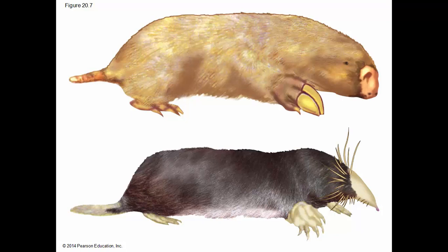Convergent evolution occurs when similar environmental pressures and natural selection produce similar or analogous adaptations in organisms from different evolutionary lineages. Here we see on top the Australian marsupial mole, and at the bottom the North American mole. They're very morphologically similar — both have paddle-shaped front feet with large claws for digging, noses covered with hard skin for burrowing, small hind legs, and both feed on insects and worms. But the one on top is a marsupial from Australia and the one on the bottom is a placental from North America. They evolved separately from different ancestral organisms and their traits are analogous — this is convergent evolution.